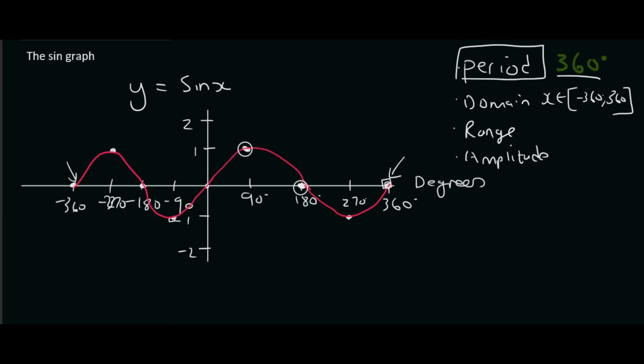Range is the same as domain, but it's just the y values. So we'll say y is an element. Now the lowest y value is minus 1 and the highest y value is 1. Because remember, the y values go in this direction. So it will be y as an element going from minus 1 up to 1.